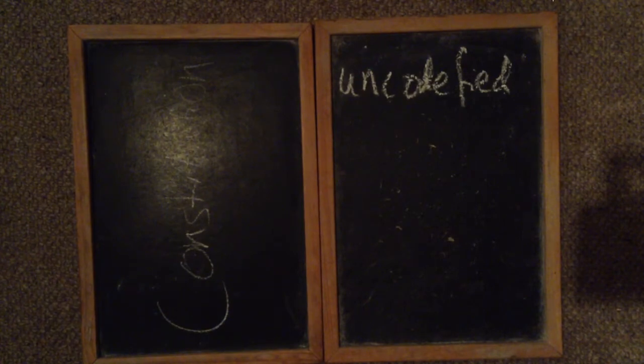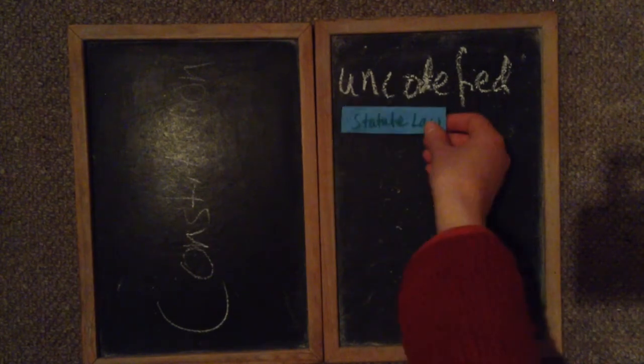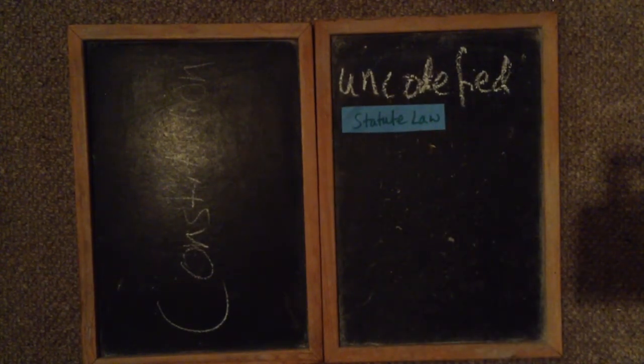The main places they are written down are statute law. Statute law is the acts of Parliament that are passed in Parliament, and this makes up part of the constitution. For example, the Parliament Acts of 1911 and 1949 limited the power of the House of Lords. Anything to do with the constitution that is passed as an Act of Parliament is part of statute law, which makes up the UK Constitution.